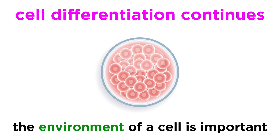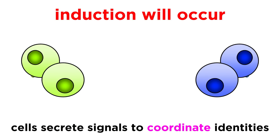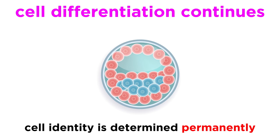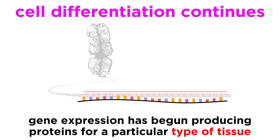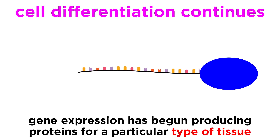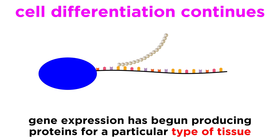Then once the number of embryonic cells grows to a certain extent, the environment surrounding a particular cell will also play a huge role. Some cells will secrete signals to neighboring cells, so this has the effect of coordinating the activity of all the cells in a particular area, through a process called induction. Once a cell is determined to be a particular type of cell, it will become that type of cell even if removed and placed in another part of the fetus. This is because events have been set into motion whereby certain genes are expressed and others are not, which results in the production of proteins that are specific to a particular type of tissue.